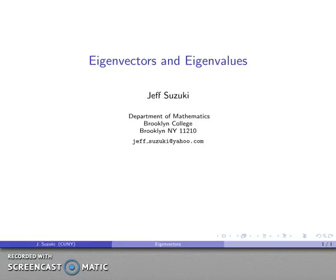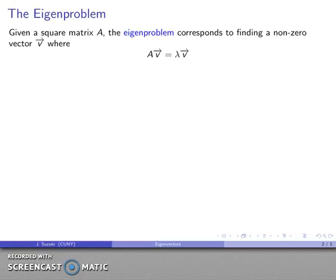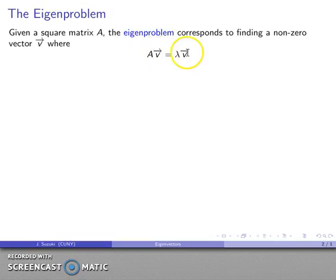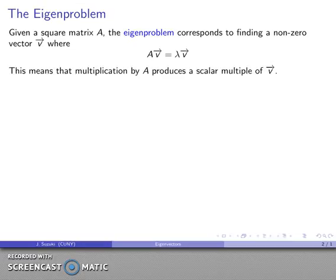One of the more important problems in linear algebra is known as the eigenproblem, which deals with eigenvectors and eigenvalues. Suppose I have some square matrix A — I want to find some nonzero vector where the product A times that vector equals lambda times the same vector. In effect, multiplication by the matrix A produces a scalar multiple of my original vector.